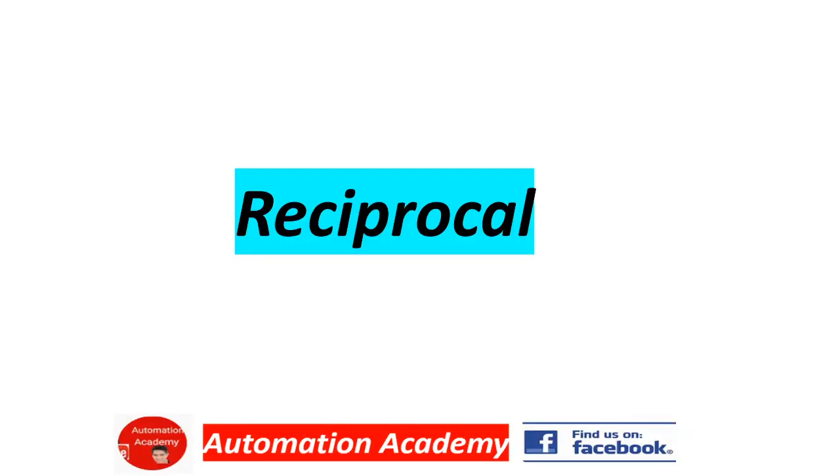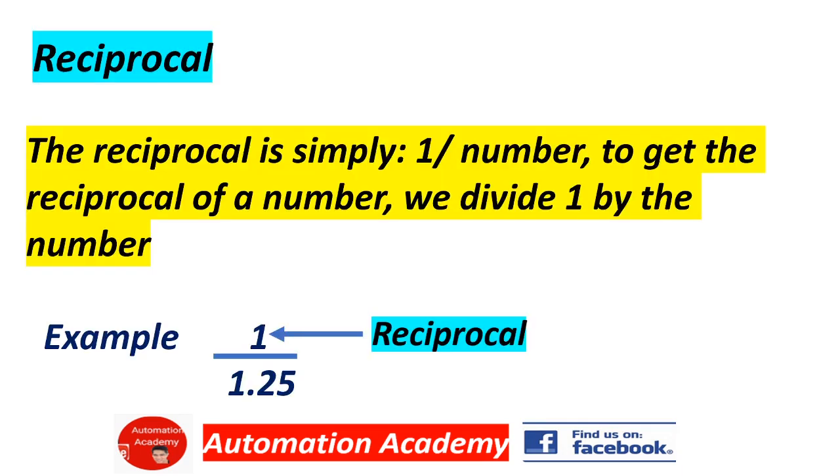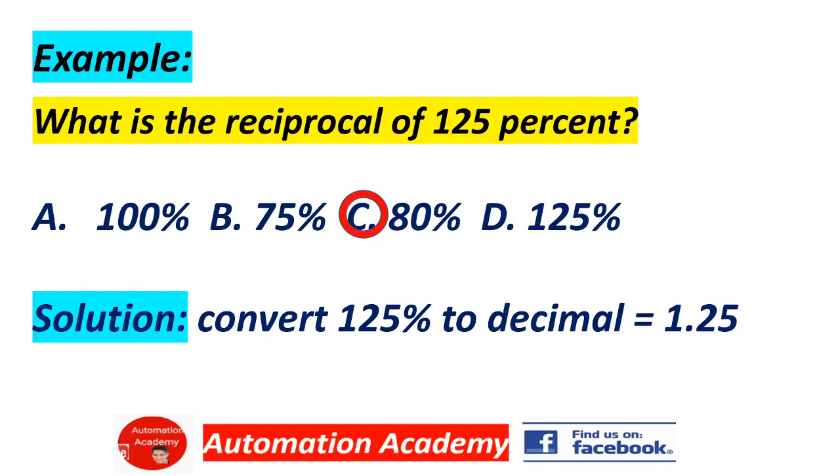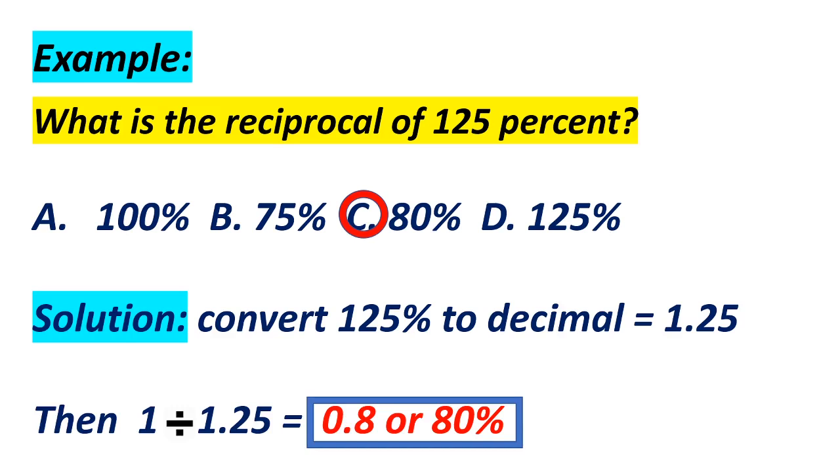Our next topic is reciprocal. The reciprocal is simply 1 over a number. To get the reciprocal of a number, we divide 1 by the number. Example: 1 divided by 1.25, and 1 is the reciprocal. Example: what is the reciprocal of 125%? A. 100%, B. 75%, C. 80%, D. 125%. Answer: C, 80%. Solution: convert 125% to decimal equals 1.25, then 1 divided by 1.25 equals 0.8 or 80%.